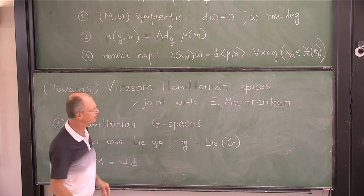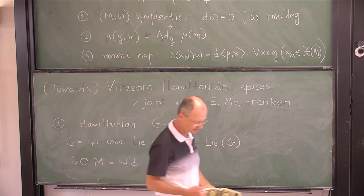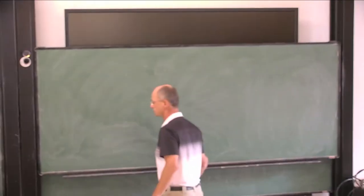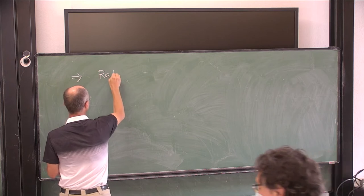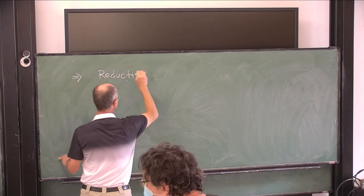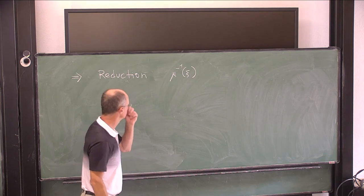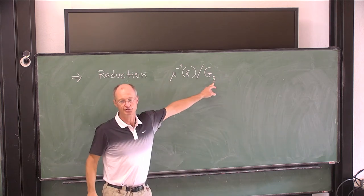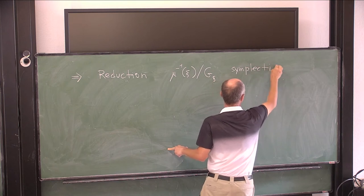What's good about this definition? It's relatively complicated with many conditions, but it's very successful. Let me briefly list the consequences. There are four main consequences. The first is called reduction: if you take the level set μ⁻¹(ξ) for some element ξ of G* and divide by the stabilizer, this space is symplectic.